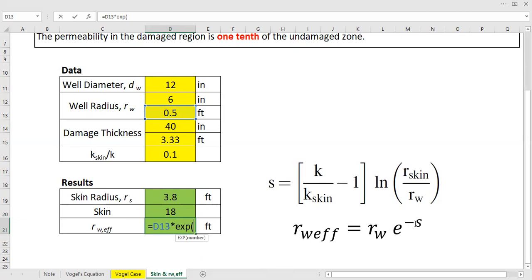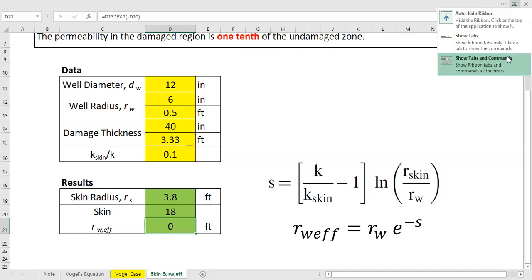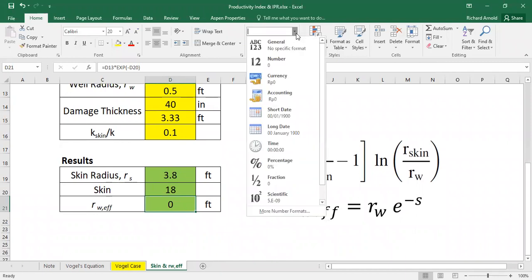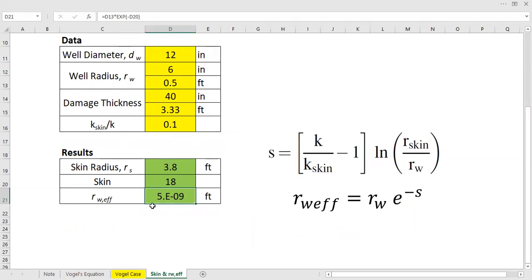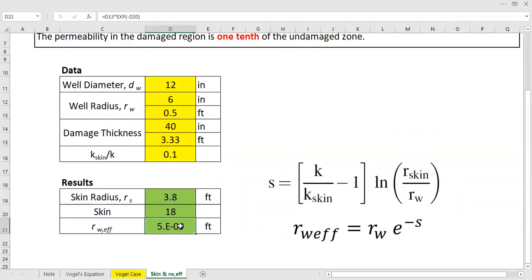Open open, and this one, minus skin factor, minus skin factor of positive 18, close, this one. Okay, very small. So I will change it, change the format of this number from number to scientific. All right, so you can see the radius now is very small, 5 times 10 to the power of minus 9 in feet.